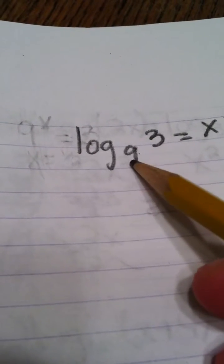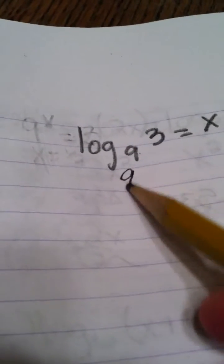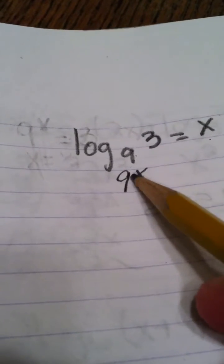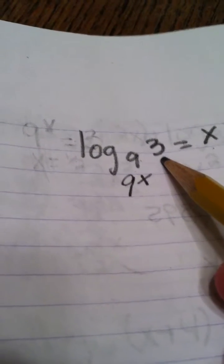To write in exponential form, this is the base, so it's 9, this is the exponent, x, and this is what it equals.